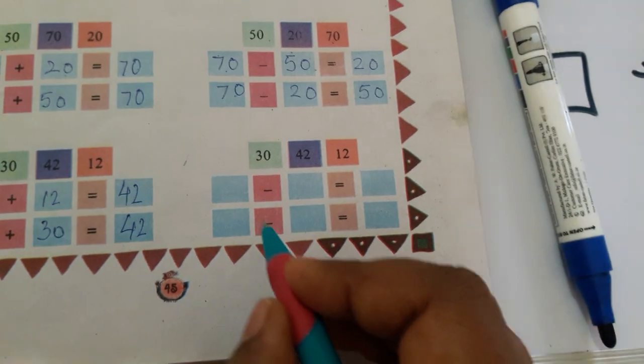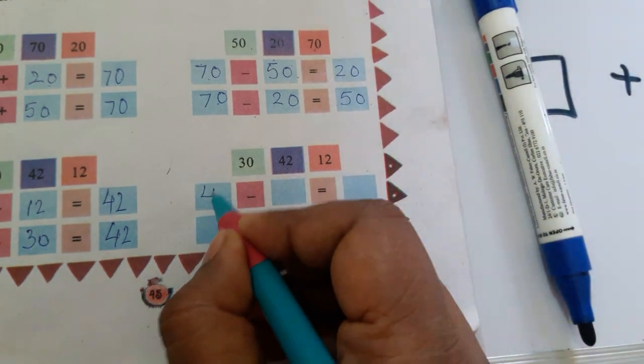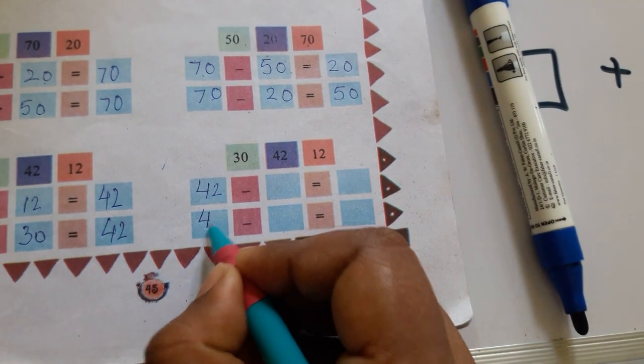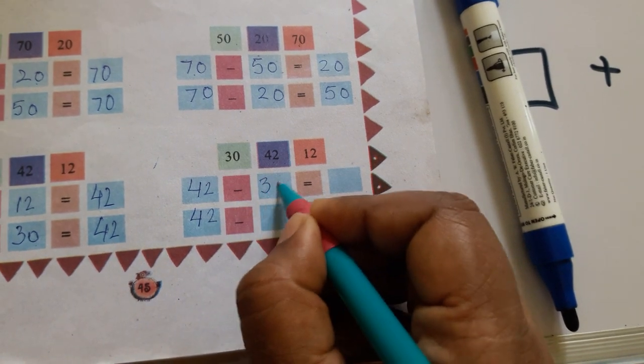Similarly, greatest number you write here 42 and subtract 30 to get 12.